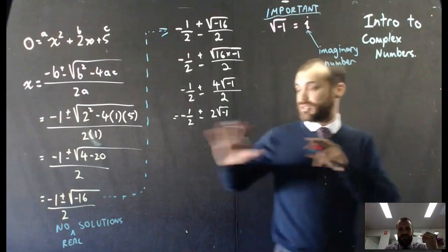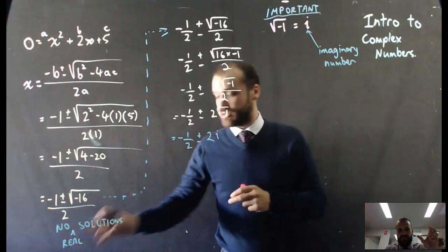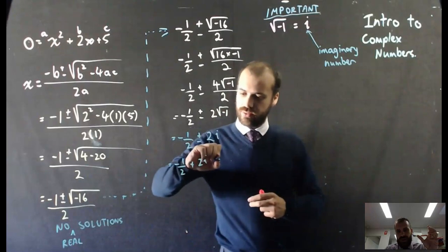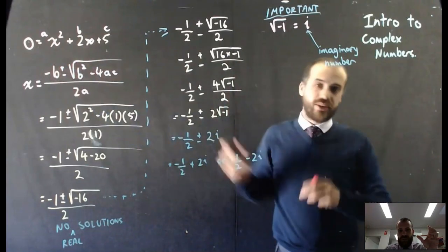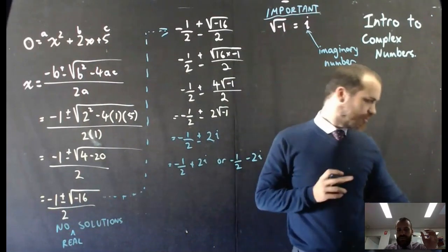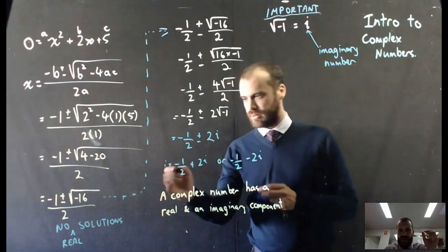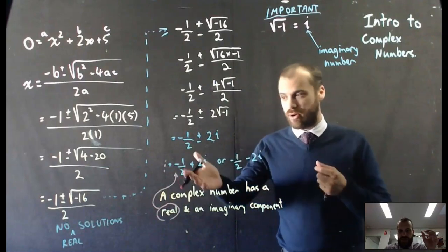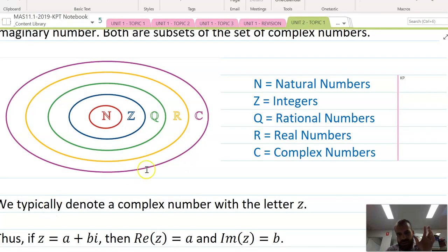I'm just going to finish solving this real quick. There's a key point here — when we finish solving that, we'll see that there's negative one half plus 2i or negative one half minus 2i. That negative one half is the real component, and that positive 2i is the imaginary component.